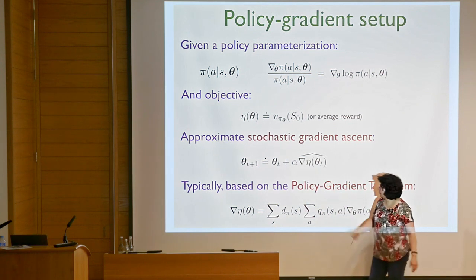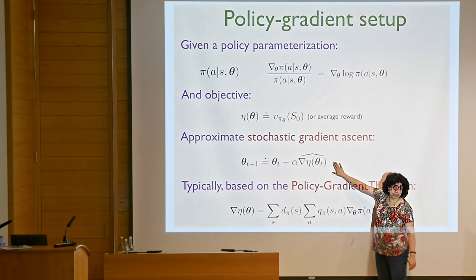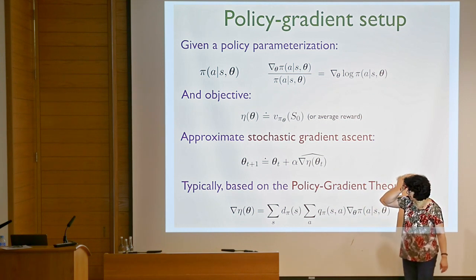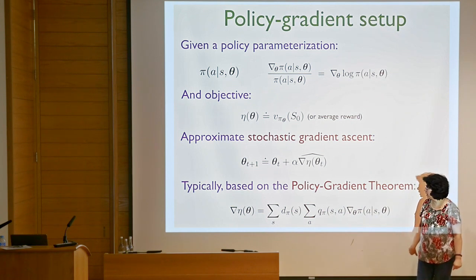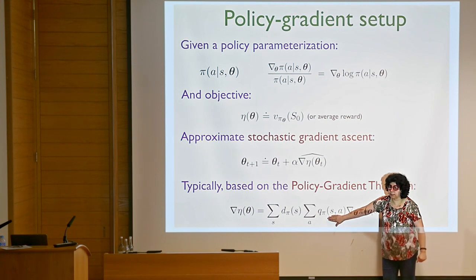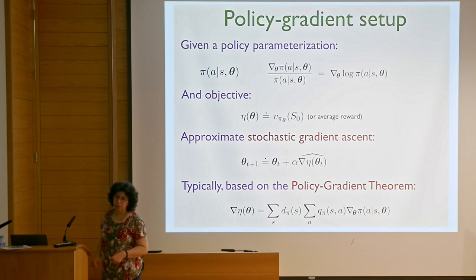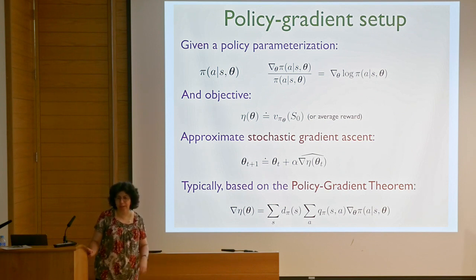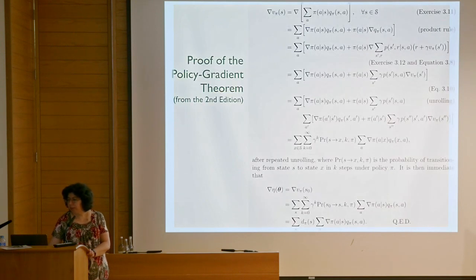There's a very nice paper from 1999 that presents the policy gradient theorem, showing that this gradient has a very nice closed-form solution. This allows us to work with just the policy. The Q_pi term is the action value function, which we can parameterize separately or estimate in Monte Carlo fashion. The d_pi term is the stationary distribution of the policy—if we always sample on trajectories, we're fine because we're acting according to d_pi.